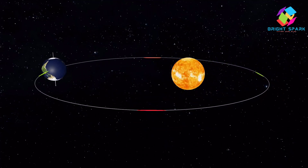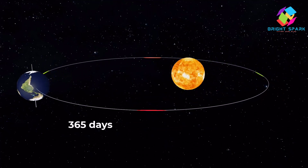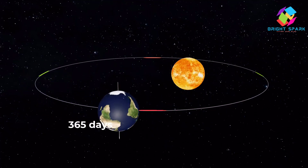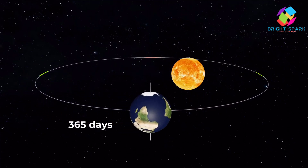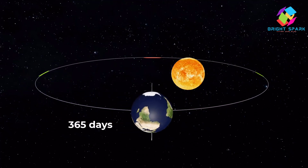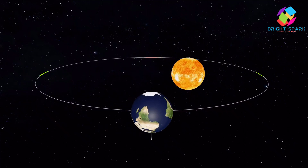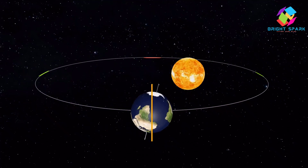Here's the coolest part: the earth doesn't stand straight. Instead, it's tilted at a 23.5 degree angle — see, like this!